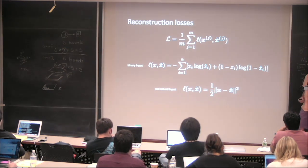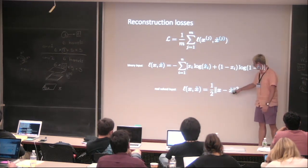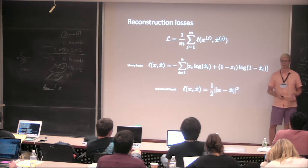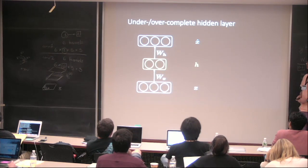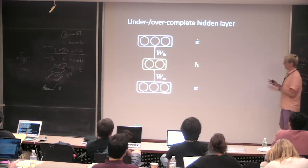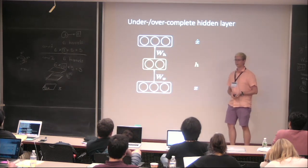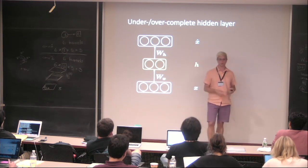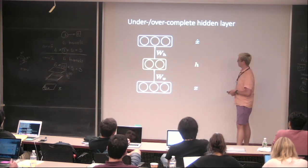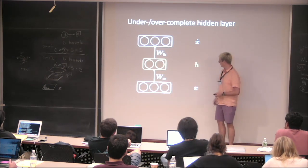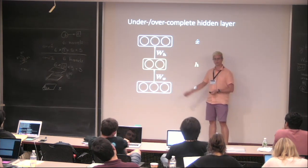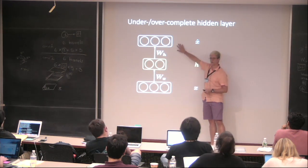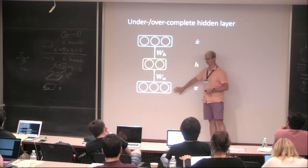We have our loss, our input, and our target, which is the same as the input. The output is our prediction. Here I use a mixed representation: circles inside blocks show the size of the encoder and decoder. For example, my input has dimension 3, then we go to a smaller representation, and then back to the larger representation. We try to match the output to the input.